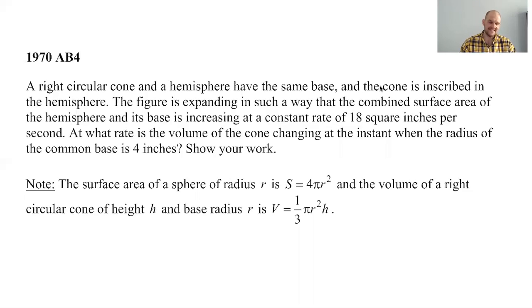Okay, in this video we're going to try to do 1970 AB4. It's a related rates problem - we'll do a bunch of related rates problems in a row in this playlist. So let's see, a right circular cone and a hemisphere have the same base.